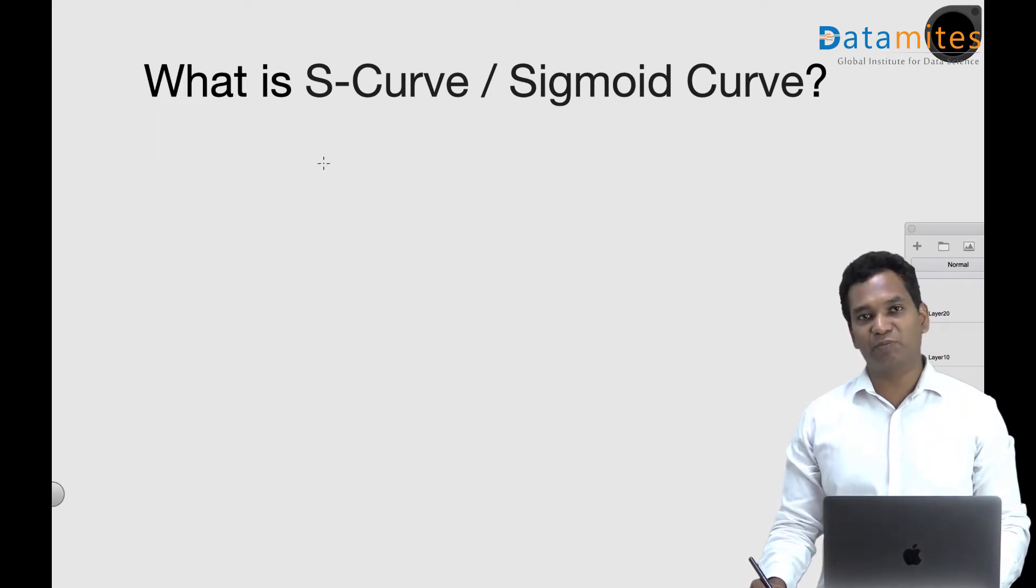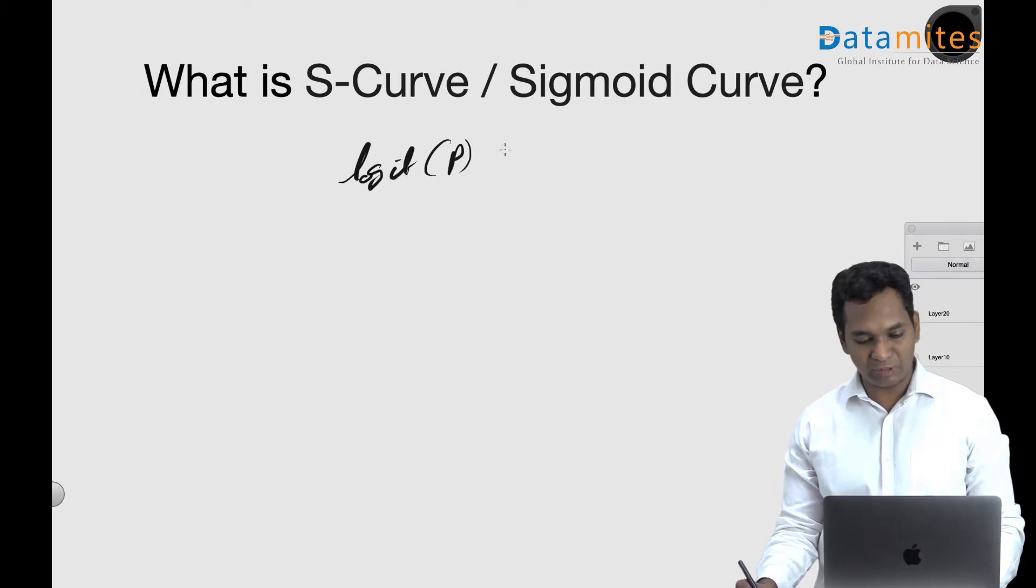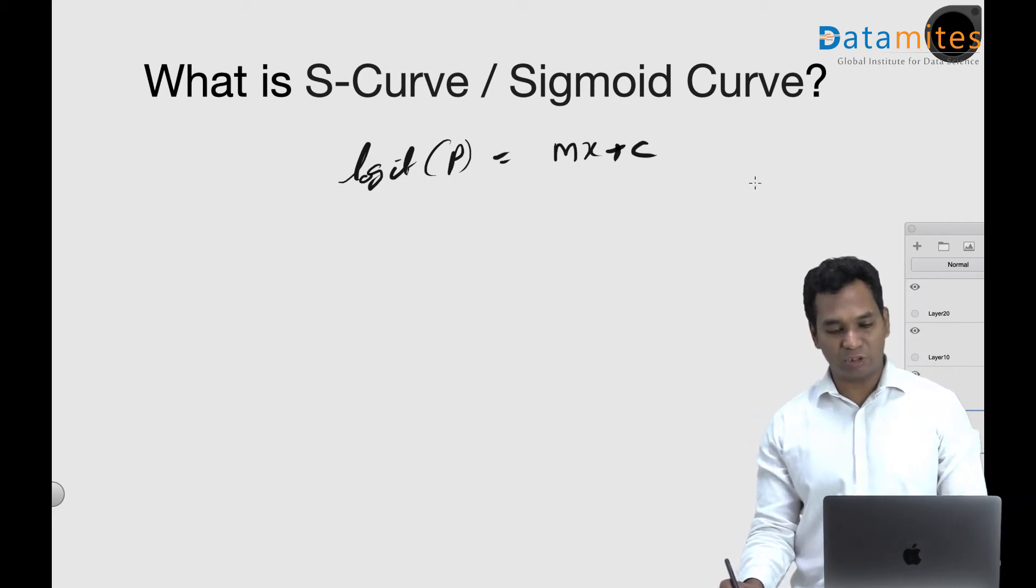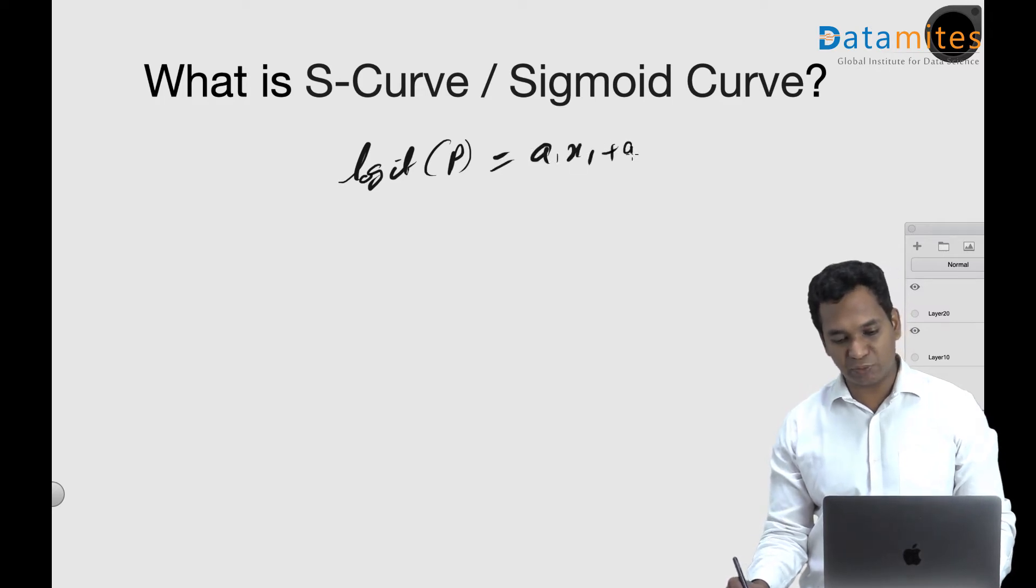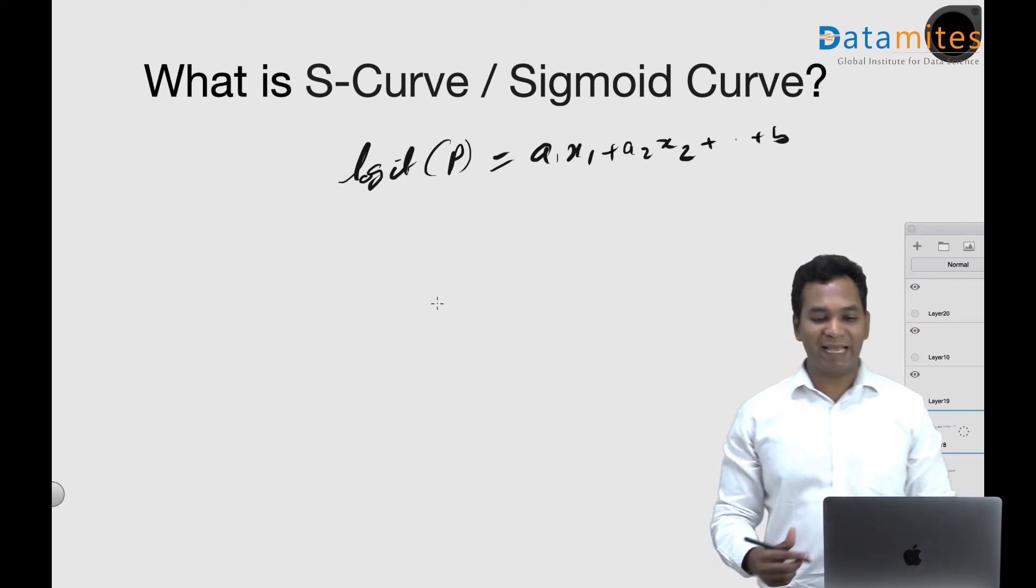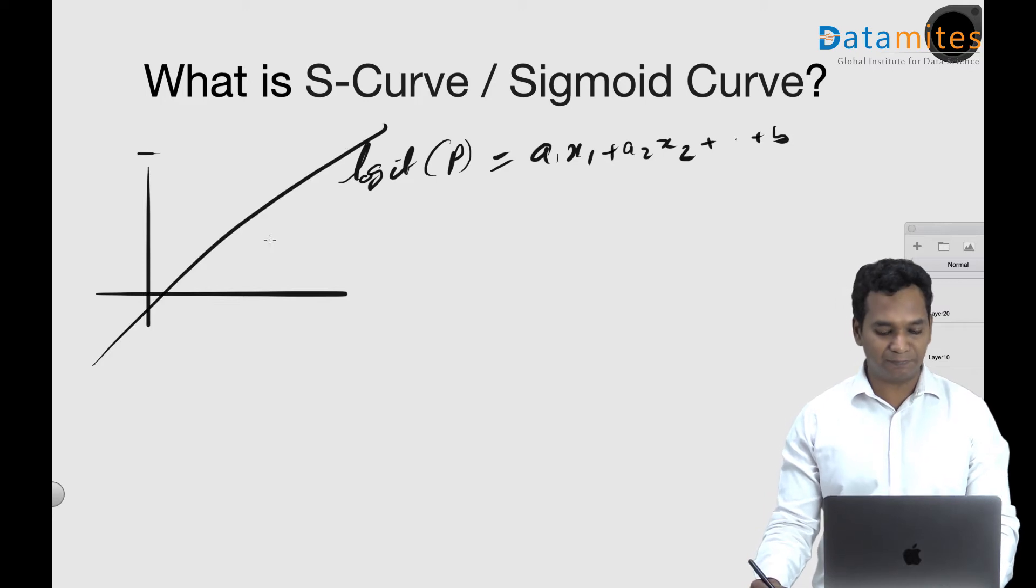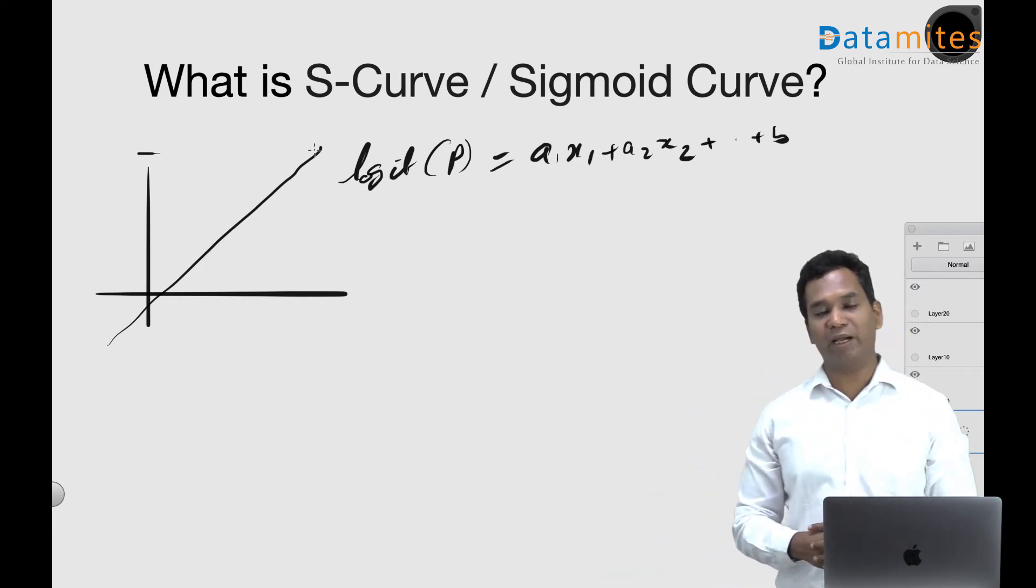So S-curve we get by equating a logit, a linear equation to a logit function. Logit of the probability is equal to a linear equation y equals mx plus c. Considering multiple variables this can be written as a1*x1 plus a2*x2 and so on plus b, that's a linear equation. A linear equation, if you try to draw it, it goes from minus infinity to plus infinity if you vary the x values.